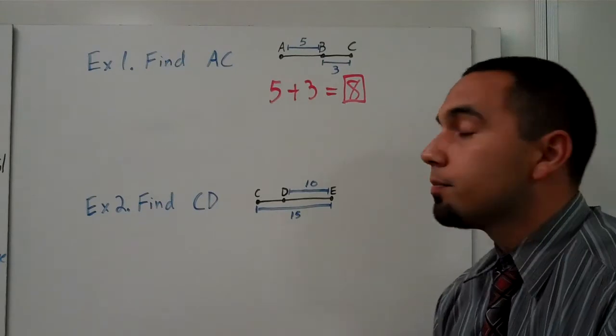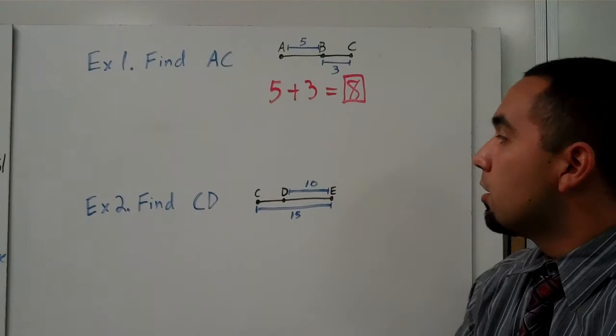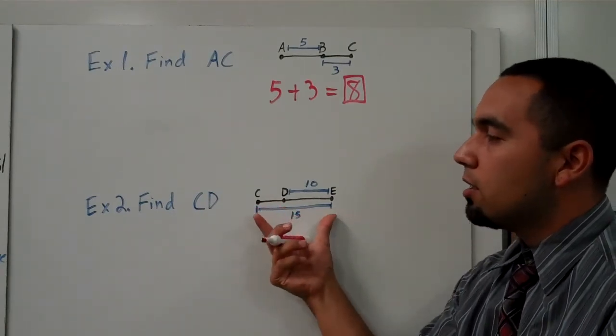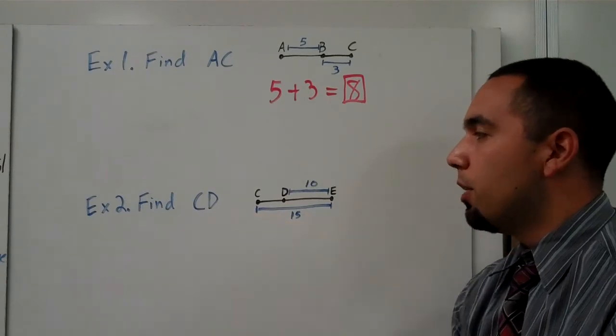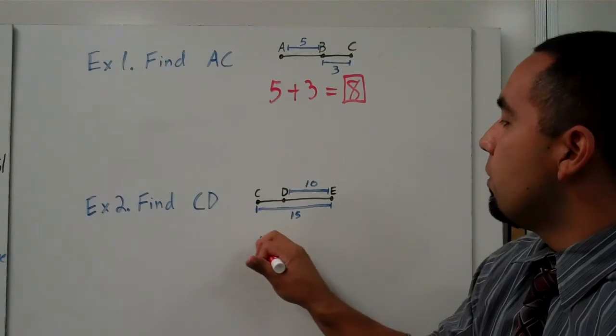And there's our answer. Okay, so example number two says find CD. Now CD, if we look at it, it's not the whole length - the whole length is CE, right? But you guys have all had algebra, this should be pretty easy. Let's take a look. We know the whole length is 15.